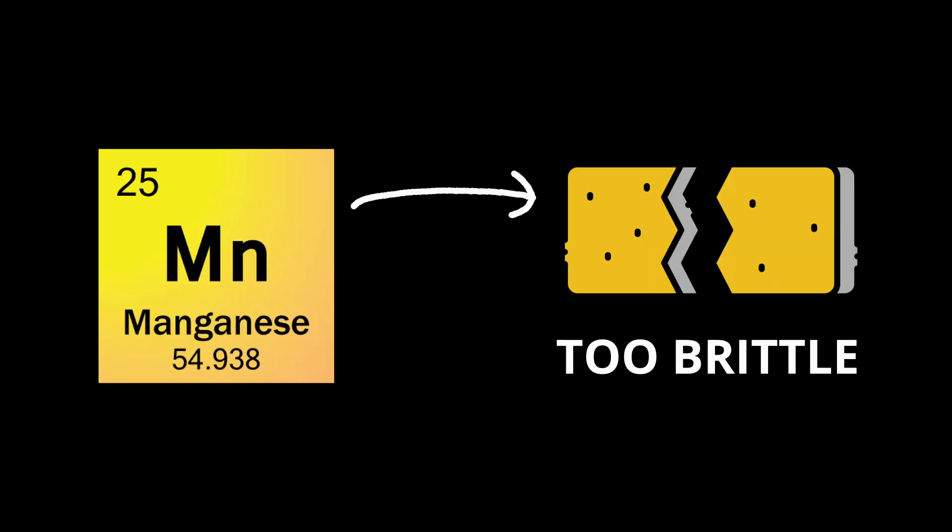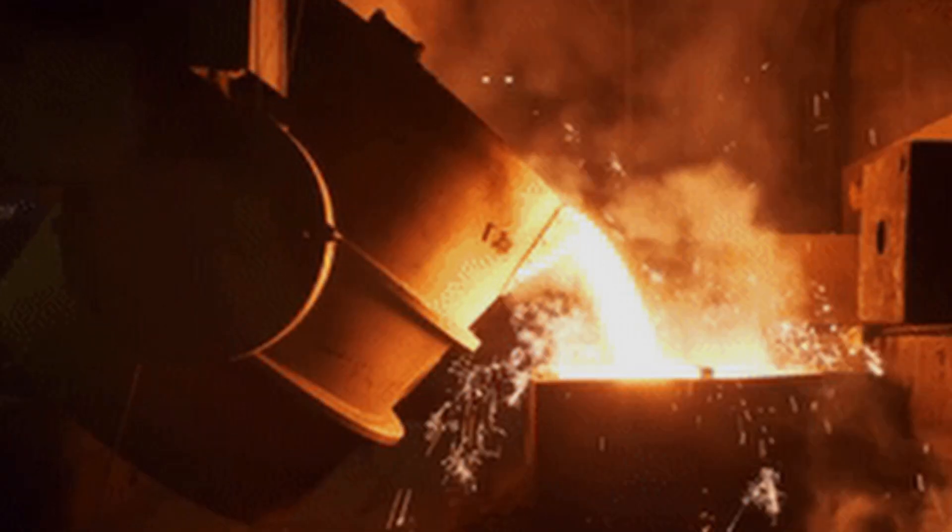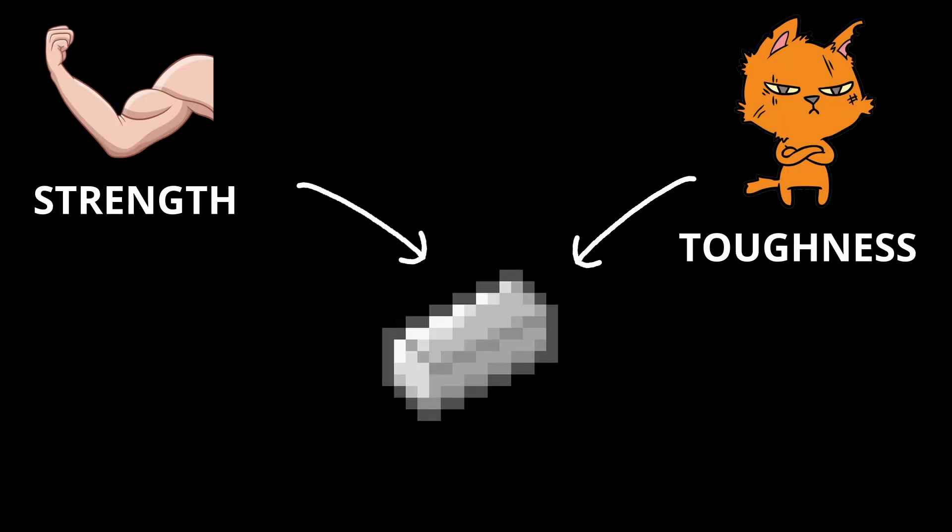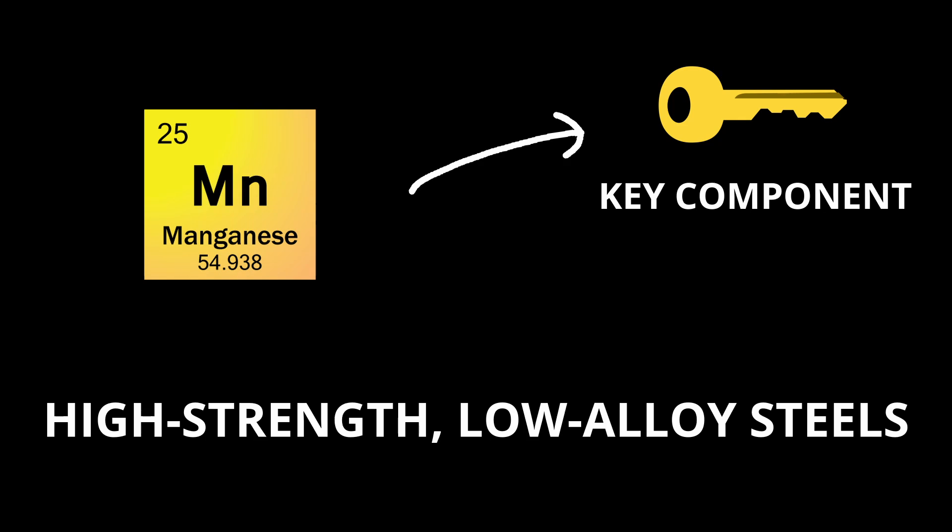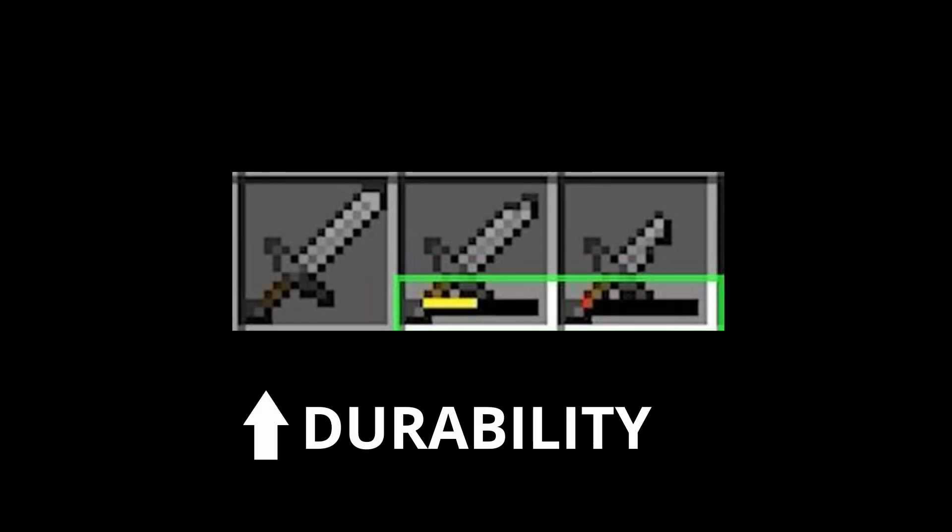Manganese is too brittle to be of use as a pure metal but it's used in steel making where it improves strength and toughness. It is a key component in high strength, low alloy steels and is also used in aluminum alloys to enhance durability.